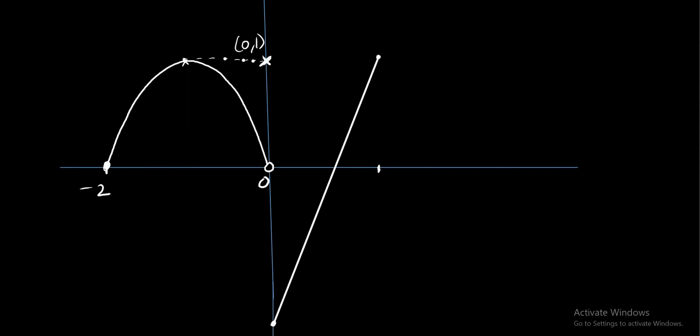So this is the graph that we are getting for the function, closed at 0, closed at 1 as well. Actually here it should be solid circle, and here also solid. So this is the graph for the function f(x). f(x) ka graph hai.